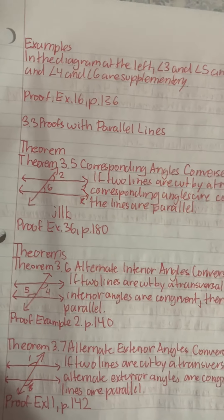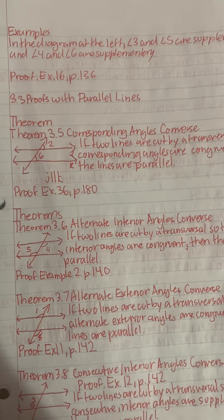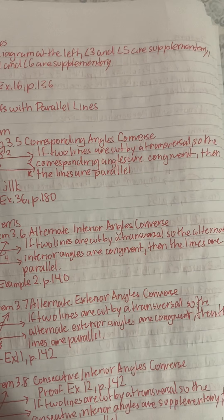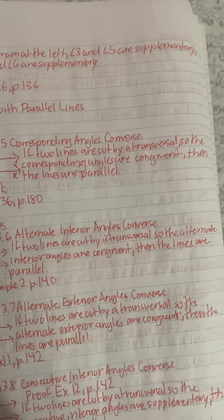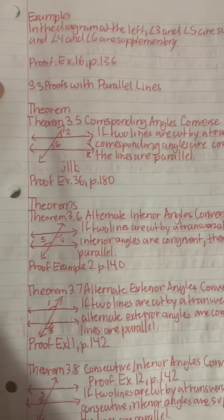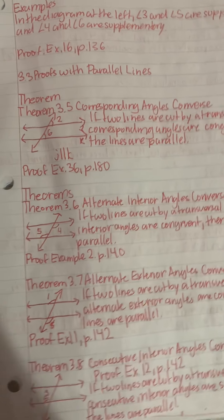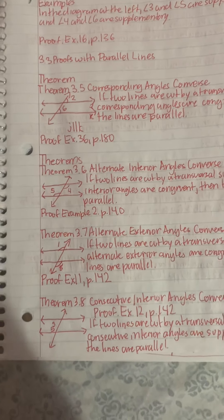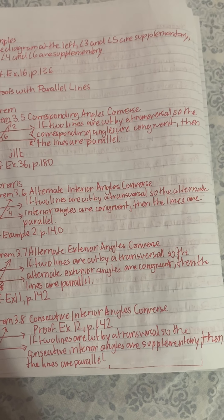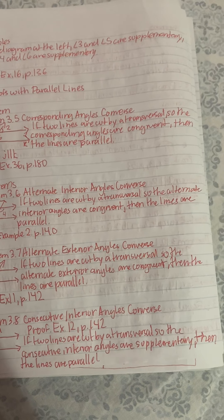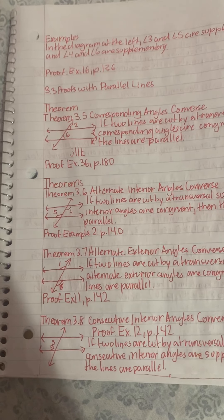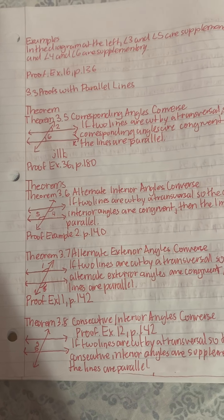3.3 Proving Parallel Lines. Theorems. Theorem 3.5, Corresponding Angles Converse: If two lines are cut by a transversal so that the corresponding angles are congruent, then the lines are parallel. Proof. Example: 36P180. Theorem 3.6, Alternate Interior Angles Converse: If two lines are cut by a transversal so that the alternate interior angles are congruent, then the lines are parallel. Proof. Example: 2P140.